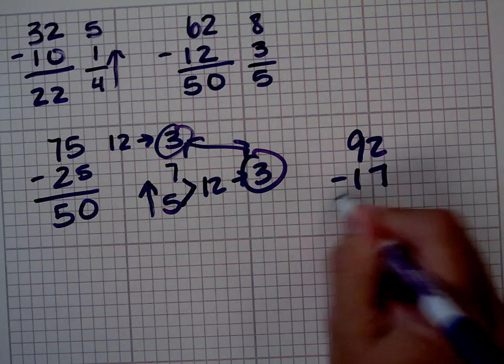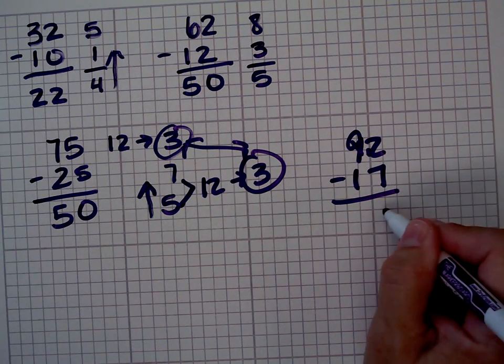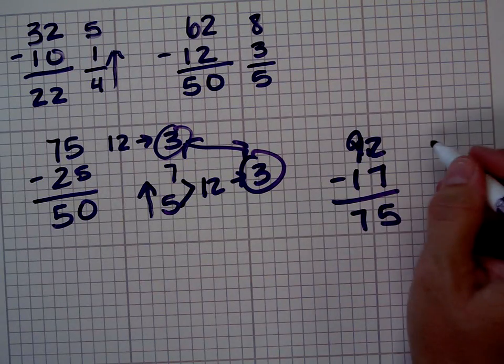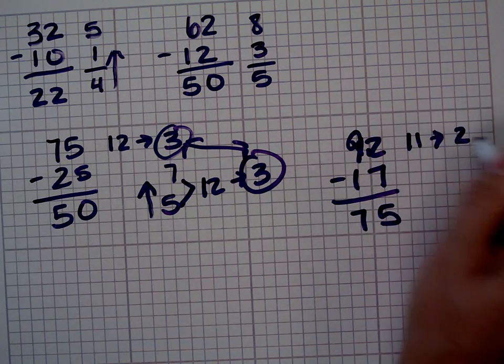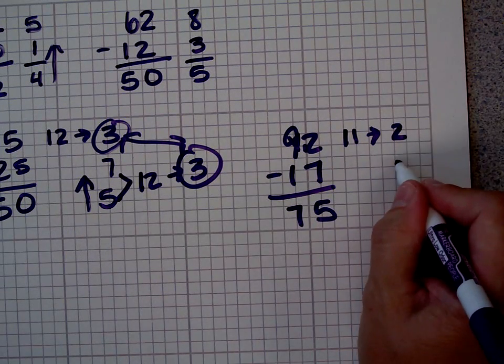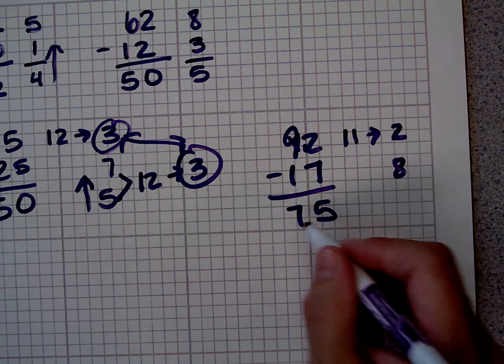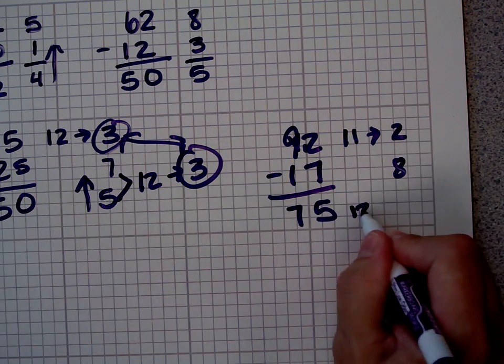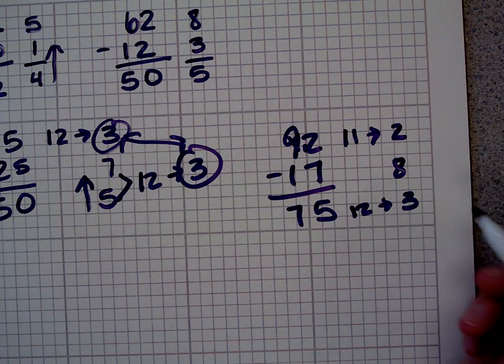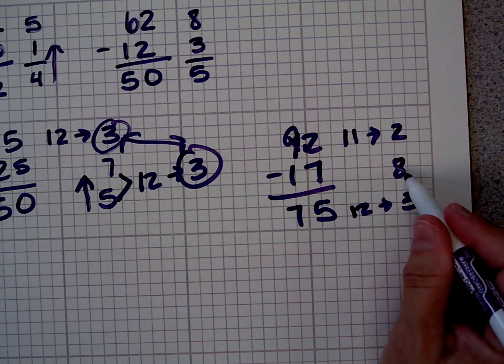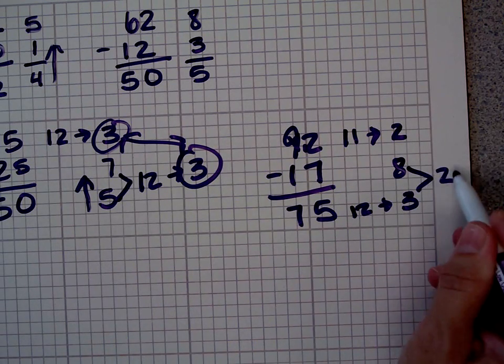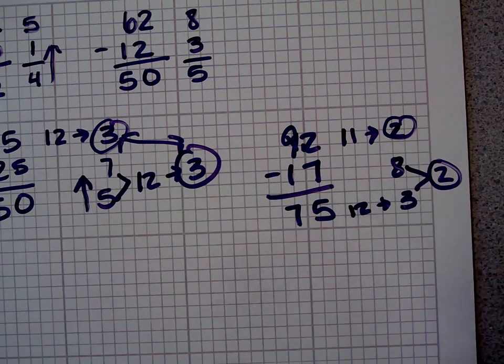92 minus 17. 12 minus 7 is 5. 8 minus 1 is 7. The digital root of 92 is 2. 9 plus 2 is 11. The digital root of 17 is 8. The digital root of 75. 7 plus 5 is 12, so the digital root is 3. Again, it looks like maybe we've made a mistake, but let's add it up this way. 3 plus 8 is 11, and 1 plus 1 is 2. So, we did get the answer correct.